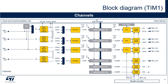Timer 1 supports 6 independent channels: 4 input capture, except channels 5 and 6; output compare; PWM generation in edge and center aligned mode; and one pulse mode output. When a capture or compare event occurs, the corresponding CCi flag is set. Shown on the left are the input stage and the input conditioning circuitry, while on the right we have the output stage. TIM1 channel 1 to 4 pins appear on both sides to indicate they're both input and output capable.